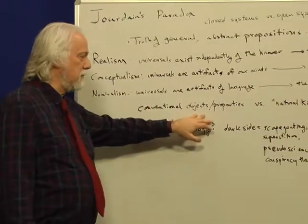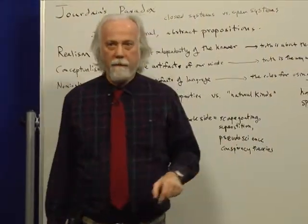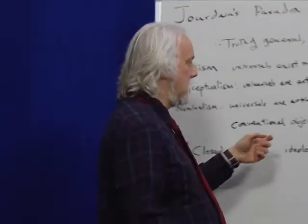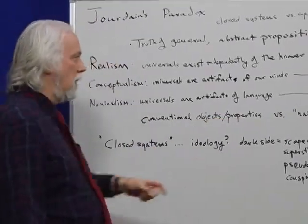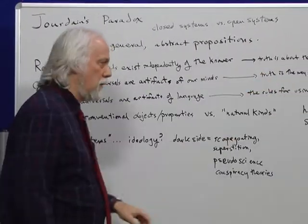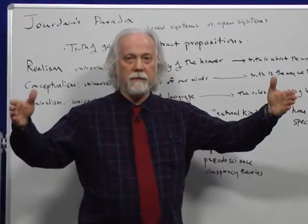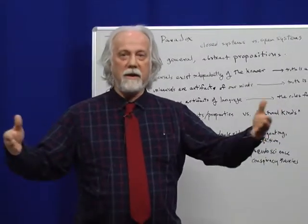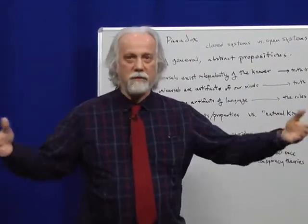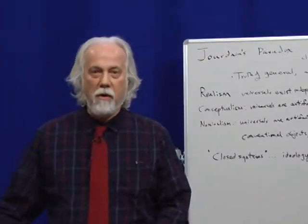Most contemporary philosophers would talk about the difference between conventional objects and properties and natural kinds. A natural kind is an object or property that exists in its own right, irrespective of whether we know about it or how we choose to describe it — that's just how it is. A conventional object or property exists only because of the way we've chosen to describe the world or things we've chosen to do. Good example: home run. A home run is not a natural kind — that doesn't mean it isn't real, but it's real only within a set of conventions. If we didn't have the game of baseball, there would be no such thing as a home run. It just isn't real in the same sense that, say, gravity is real.